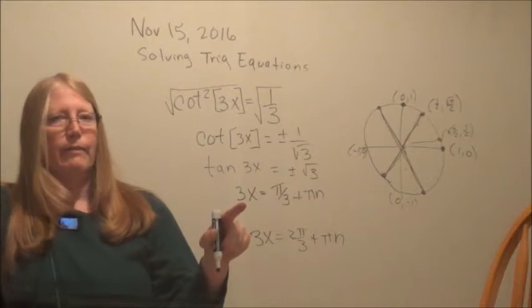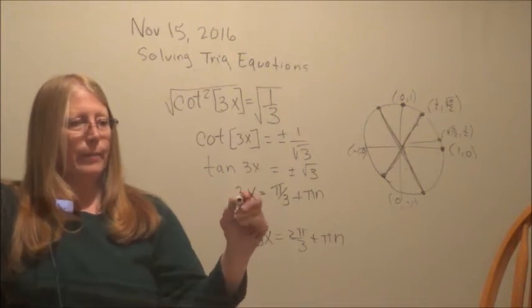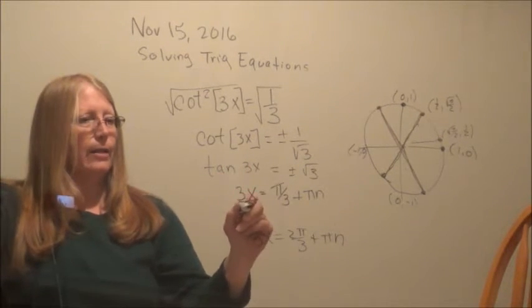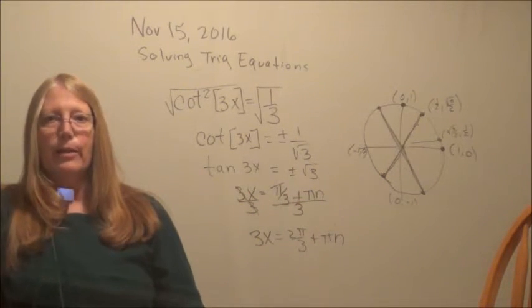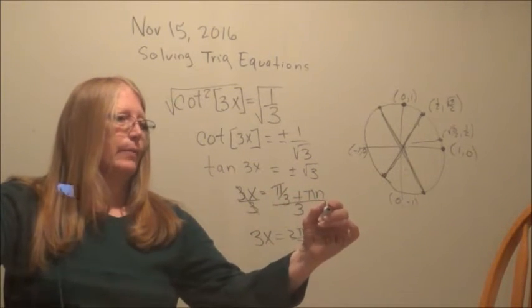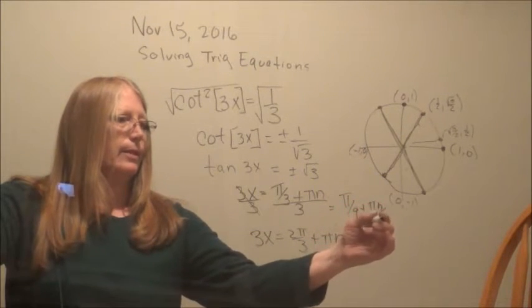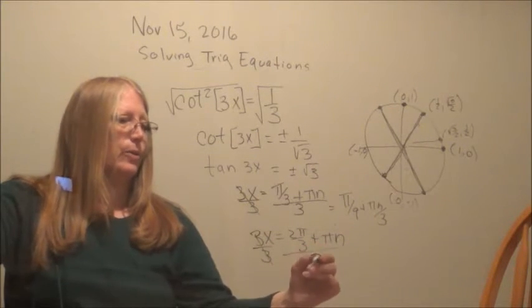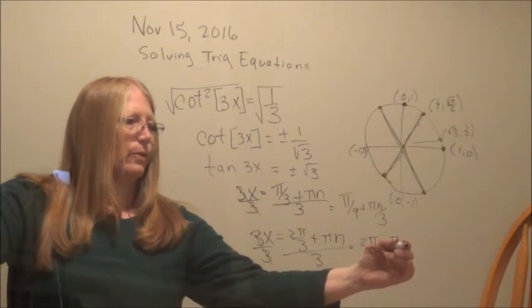But now it's the time. Now that I've taken the tangent and used the unit circle, this 3x can be divided. It can't be divided when the tangent is still connected to it, but now it's free as a bird and I can divide by 3 and find out what I really want to know, what x equals. So when I divide both of these terms by 3, I get pi over 9 plus pi n over 3. And this one, when I divide both sides by 3, I get x equals 2 pi over 9 plus pi n over 3.